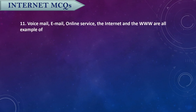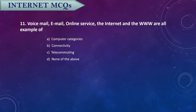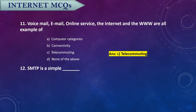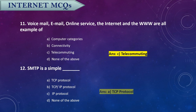Question eleven: Voicemail, email, online service, the internet, and the WWW are all examples of what? These are examples of telecommuting. Question twelve: SMTP is a simple dash — it is a simple TCP protocol.